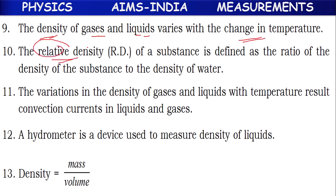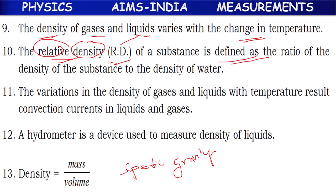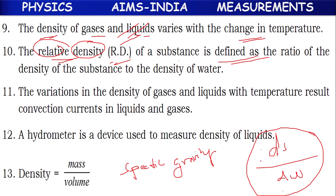We have one more term called relative density (RD), sometimes called specific gravity. Relative density of a substance is defined as the density of the substance divided by the density of water. This ratio tells us how many times heavier or lighter the substance is compared to water. With the help of relative density, we can make that comparison.